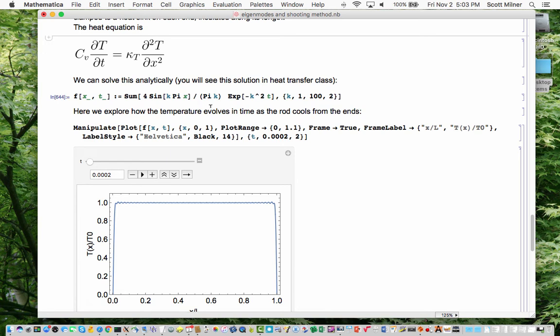And so what happens is the rod is initially uniformly hot in the middle and then heat will flow out of the rod into the cold heat sinks. And so you might expect that heat will flow out more quickly from the ends and so the temperature will drop more quickly on the ends and more slowly in the middle. It turns out this problem is one that can be solved analytically and you'll see this solution in heat transfer class if you haven't seen it yet. And I have built a little manipulate panel to explore how the temperature evolves in time as this rod cools from the ends.